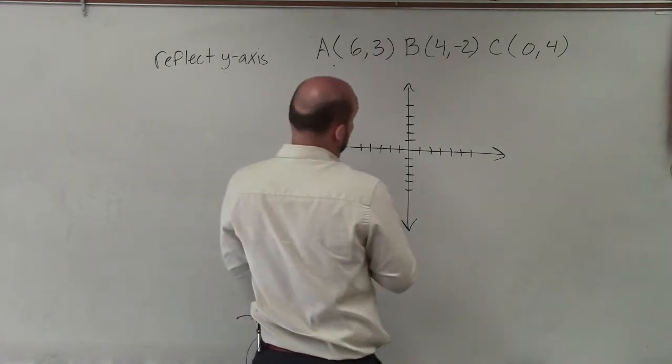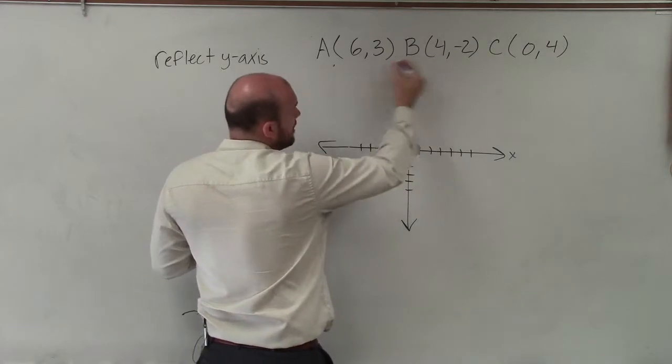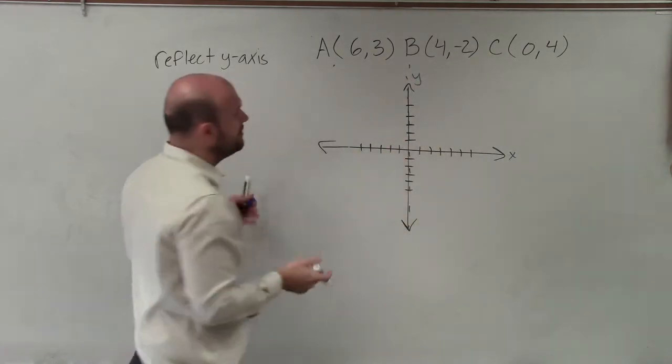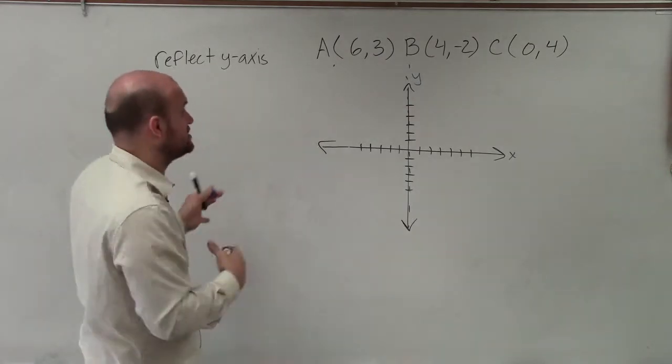So we first need to know where the y-axis is. Well, the y-axis is here. Here's the x-axis. So therefore, I'm going to plot these points, and I'm going to reflect it about this line. But there's a certain rule that we can do without even actually graphing them and reflecting them over using the line of symmetry.